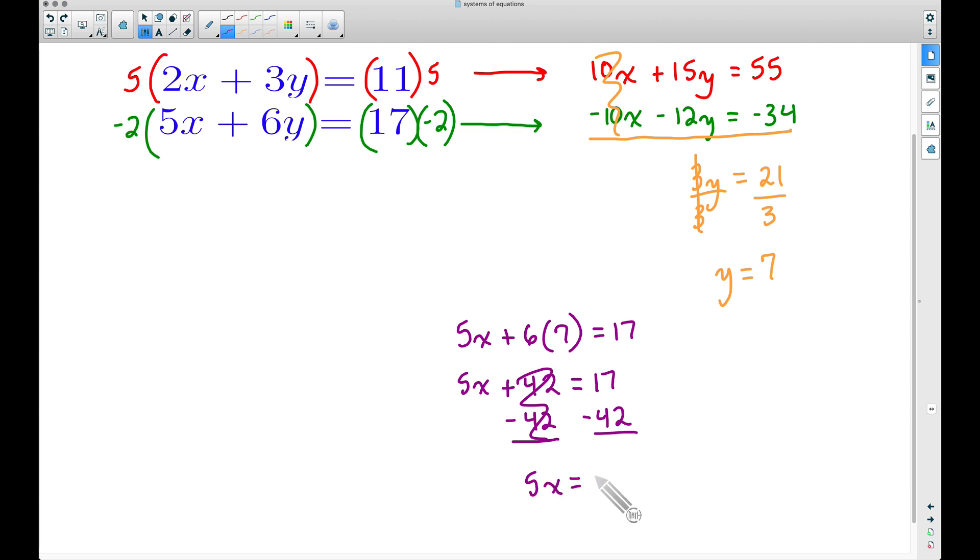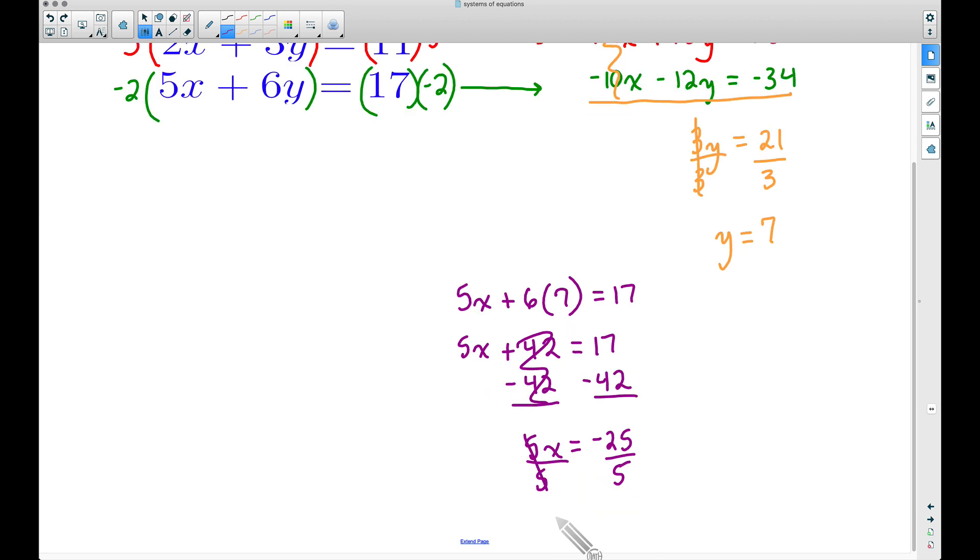And now to get x by itself, dividing both sides by 5, we get a value of x that is equal to negative 5. Therefore our solution is going to be negative 5 comma 7.